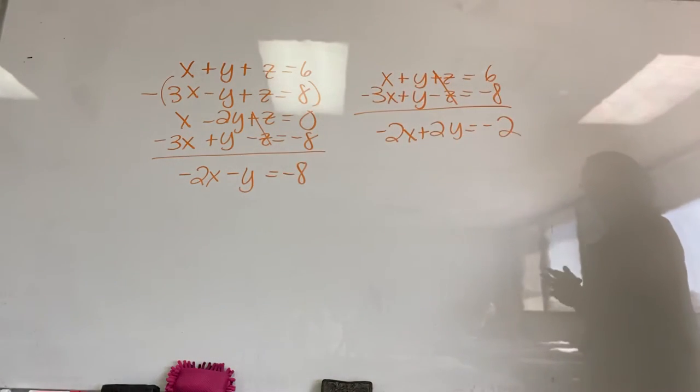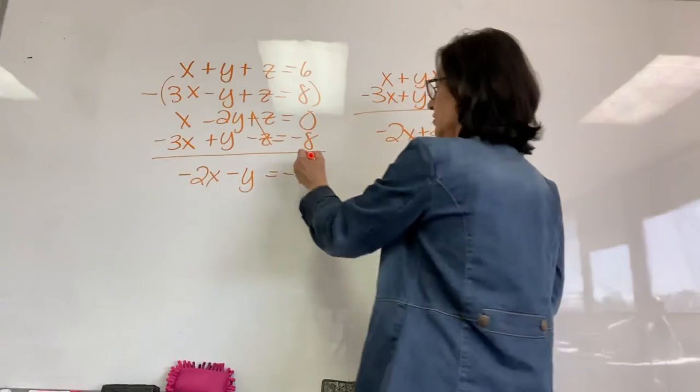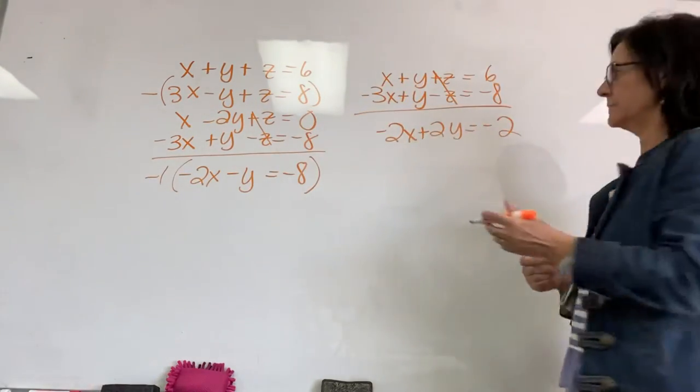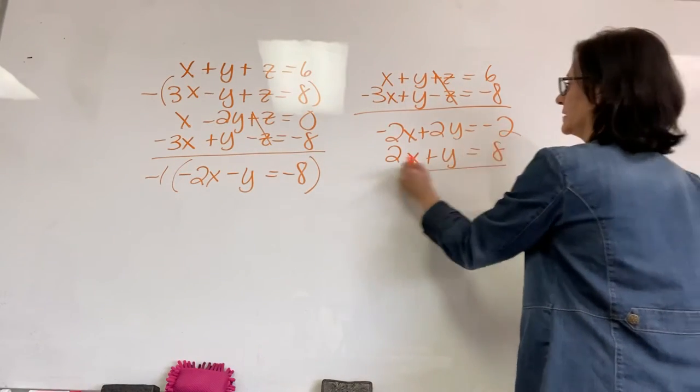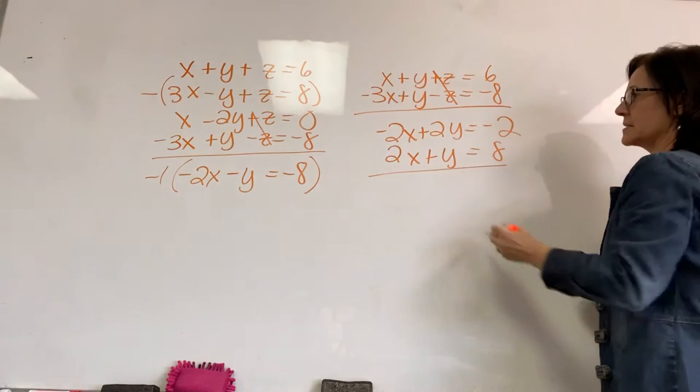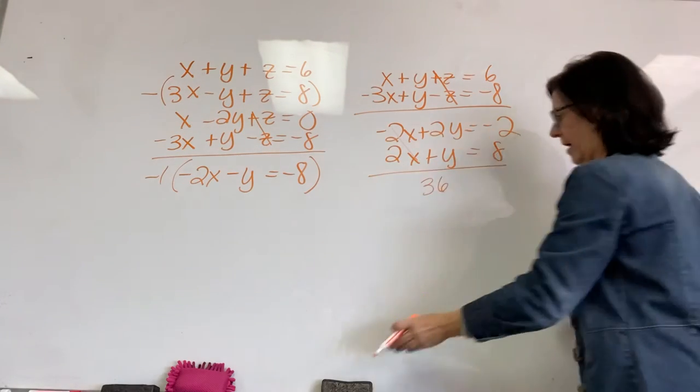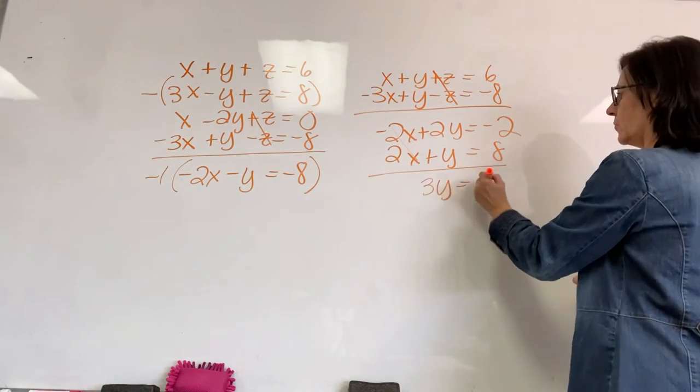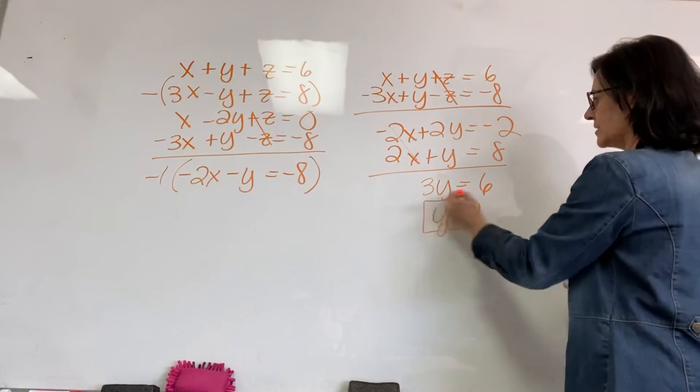My 2's both have the same coefficient. So, I'm going to use elimination by multiplying this one by negative 1 and then adding it. So, that's 2X plus Y equals 8. My Xs eliminate. I'm left with 3Y, 3Y, not 36. 3Y equals 6. The value of Y is 2. All right. That's one of my solutions.